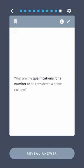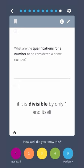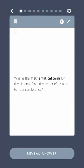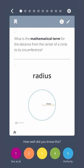What are the qualifications for a number to be considered a prime number? If it is divisible by only one and itself. What is the mathematical term for the distance from the center of a circle to its circumference? Radius.